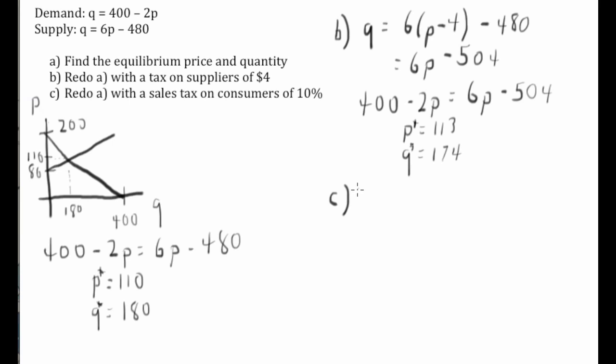Part C works much the same way, except now the tax is on consumers. So it's going to change the demand equation. Prices are going to be 10% higher. So that new equation will be Q equals 400 minus 2 times 1.1 (that accounts for the 10% raise) times P. Or 400 minus 2.2P.